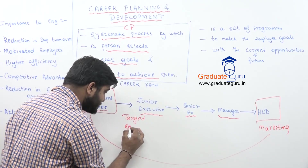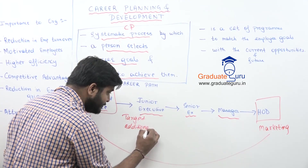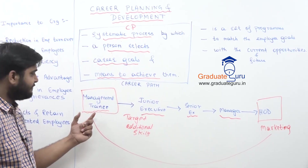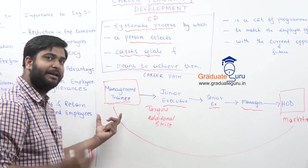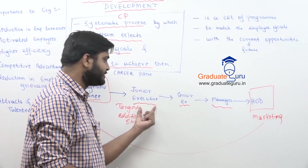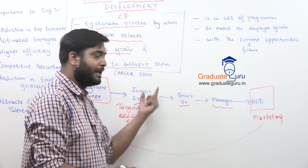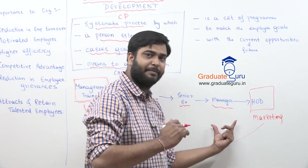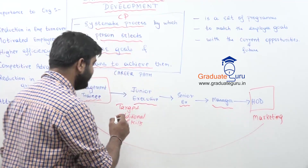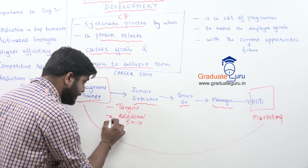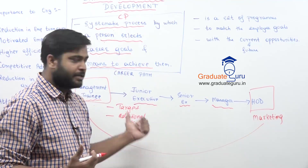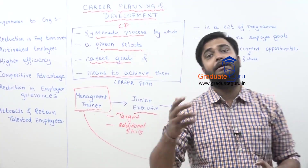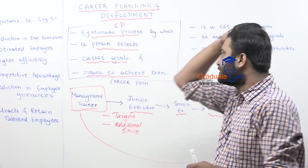When you are working at one level, you need certain skills. The skill set required at management trainee level is different from what's required at junior executive level, and again different at managerial level. To grow, you need to complete your targets and learn additional skills. That is what career planning means. On the other hand, what do you mean by career development?